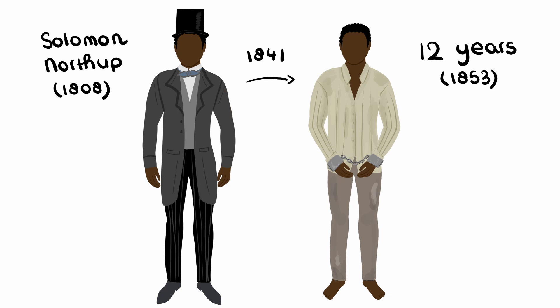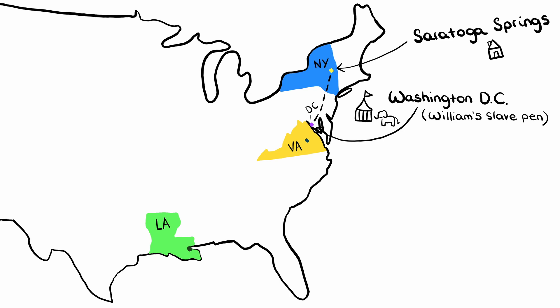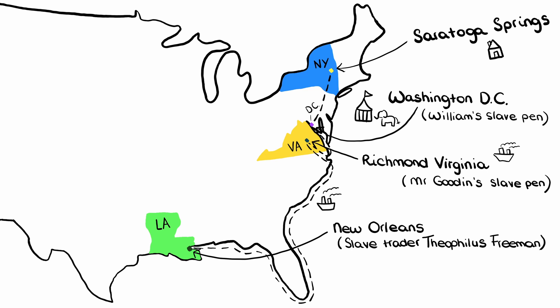Let's talk about setting. Solomon was born in Minerva, New York, but sets up a home with his wife in Saratoga Springs. He travels to Washington DC with two men who have promised him work, but he is tricked and ends up in William's slave pen. A steamboat takes Solomon to Richmond, Virginia, into the slave pen of Mr. Gooden. Another boat named Orleans takes Solomon to New Orleans. Solomon planned an escape on this boat with two other men, but one of them died due to smallpox. In New Orleans he ends up with Theophilus Freeman, the slave trader.